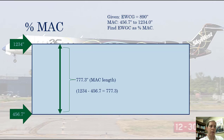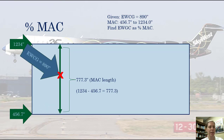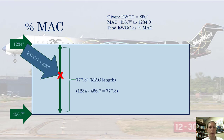Taking that information, our empty weight center of gravity is at 890 inches. I'm going to estimate where along that line 890 inches would approximately fall — probably 50 to 60% of the way along. So I'll mark that 890 inches along my mean aerodynamic chord. Now we have to figure out what percent of our total MAC length that 890-inch location represents.